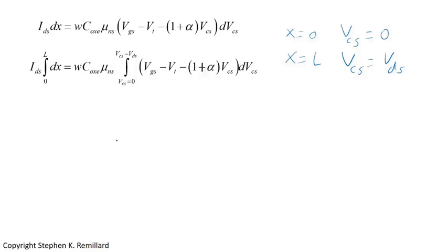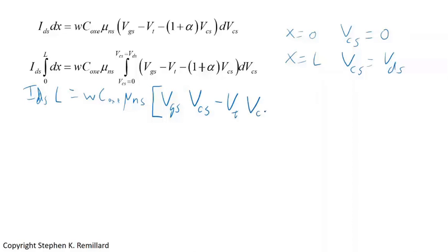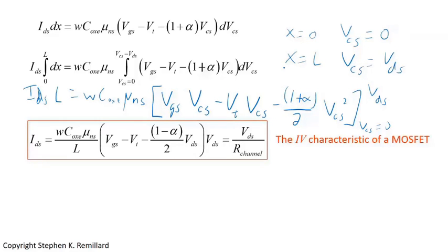Evaluating the integrals: the left side gives I_DS * L. The right side gives W * C_oxide * mu_nS times the integral of (V_GS minus V_T minus (1 + alpha) * V_CS) dV_CS from 0 to V_DS. Integrating: (V_GS minus V_T) * V_DS minus (1 + alpha)/2 * V_DS squared. Dividing both sides by L gives the IV characteristic.